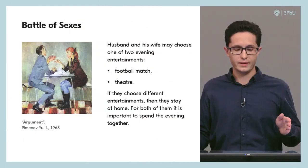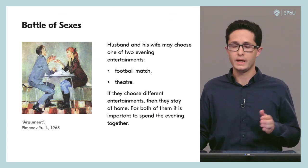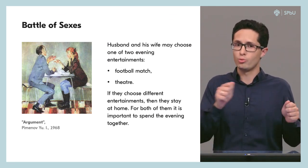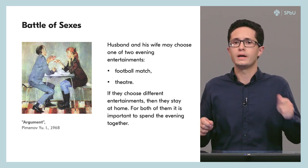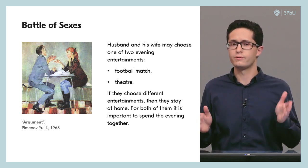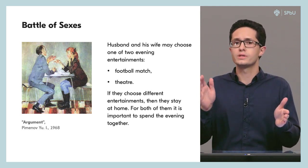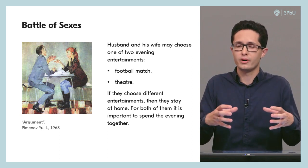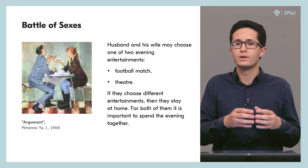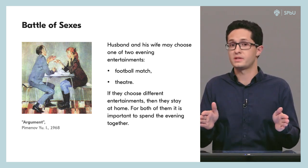Let's start with a classical example from game theory called the Battle of the Sexes. In this example we have a husband and wife choosing where they want to go in the evening. They have two options: the first option is to go to the football match, and the second option is to go to the theater. Of course, the couple wants to spend the evening together and does not want to be separated.